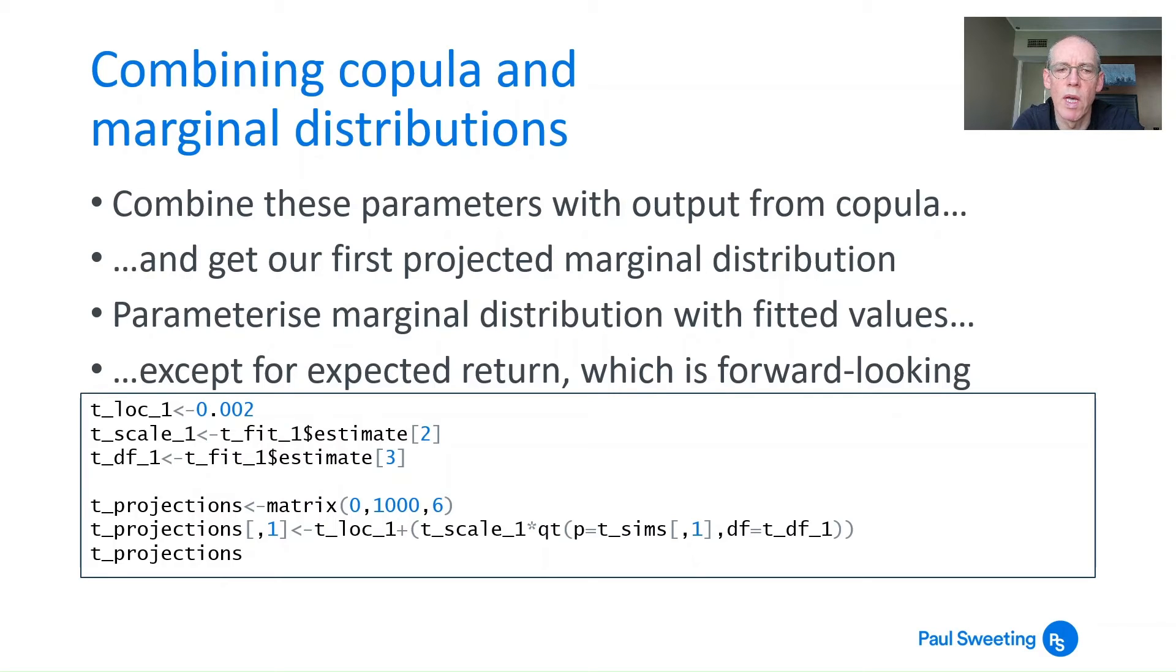My scale and degrees of freedom I'll take from the estimates. From this one, we use a dollar sign rather than an at sign to pull out that information. So tfit_one dollar estimate number two, the second item in that parameter, is the scale parameter. Number three gives us the degrees of freedom. You had three items: first is location, second is scale, third is degrees of freedom. We're pulling out the second for scale, the third for degrees of freedom, and putting those into tscale_1 and tdf_1.